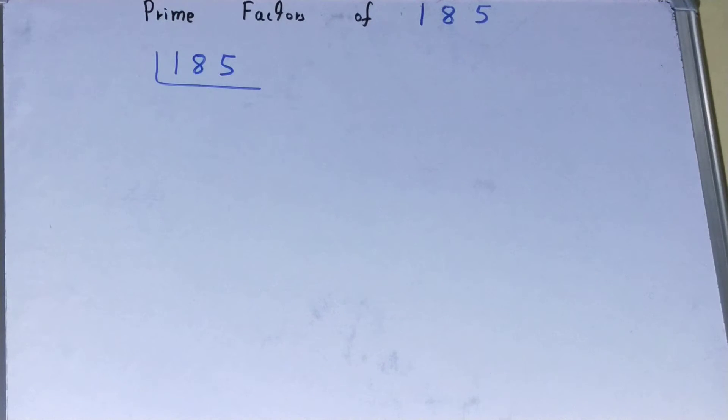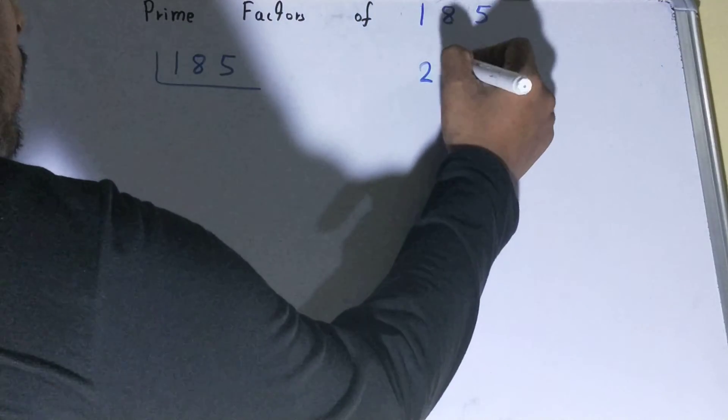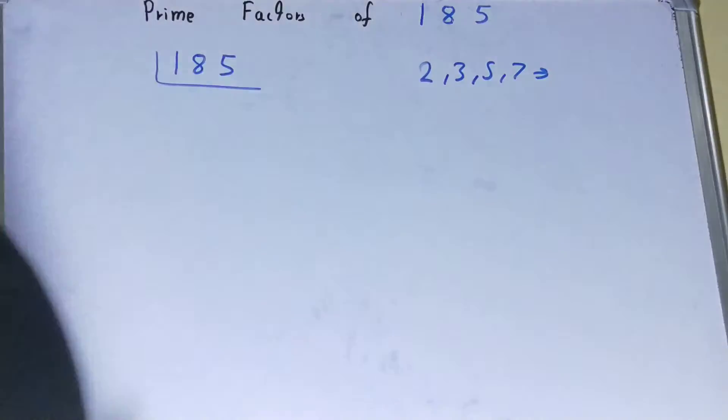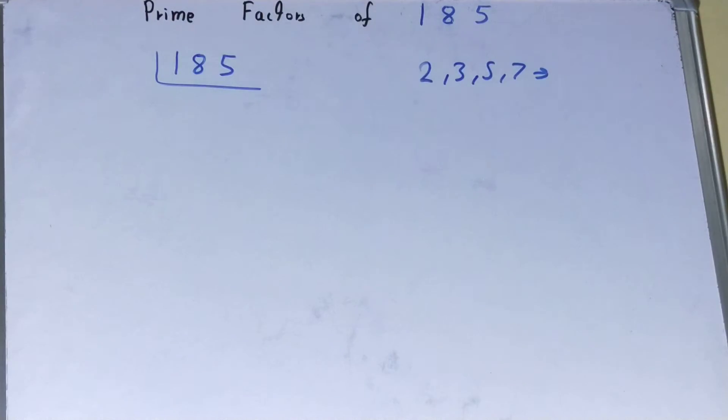you must have an idea about what prime numbers are. Prime numbers are numbers that are divided by one and themselves only, like 2, 3, 5, 7, and so on. We'll start with the lowest prime